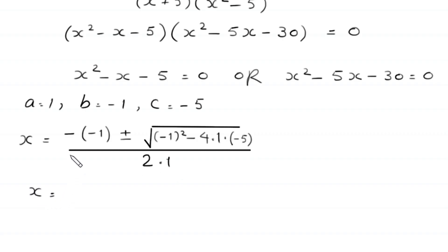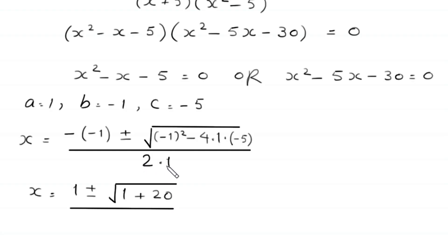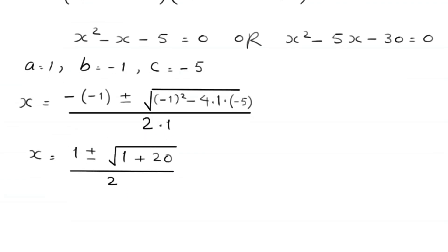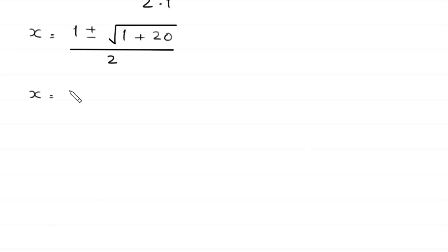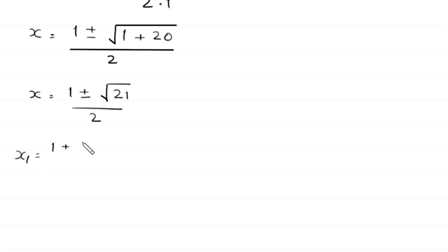x is equal to: this minus and this minus becomes positive 1, plus or minus the square root of negative 1 squared is 1, and negative 4 times 1 times negative 5 is plus 20, divided by 2. So x equals 1 plus or minus the square root of 1 plus 20, which is 21, divided by 2. From here we get two values: x1 equals 1 plus square root of 21 divided by 2, and x2 equals 1 minus square root of 21 divided by 2.